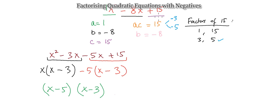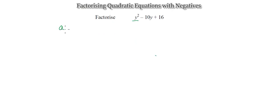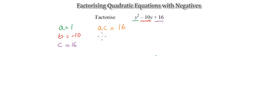If you expand those two brackets you get exactly x squared minus 8x plus 15. Now let's do another example. Identifying the three terms: a is 1, b is minus 10, and c is positive 16. So a times c is 1 times 16, giving a positive 16, and we need numbers that add to give minus 10.